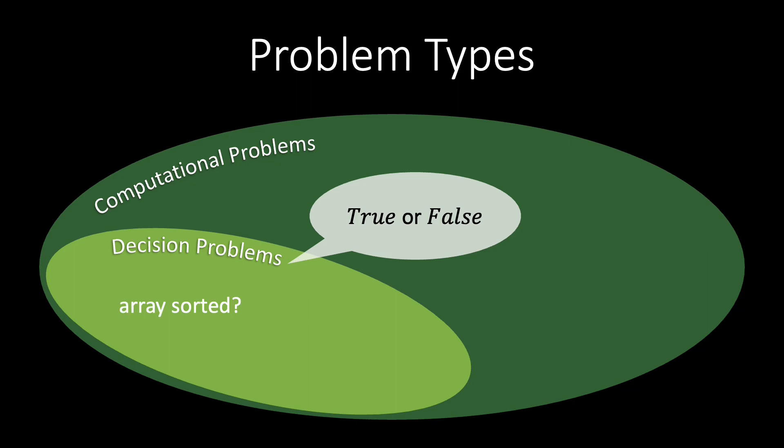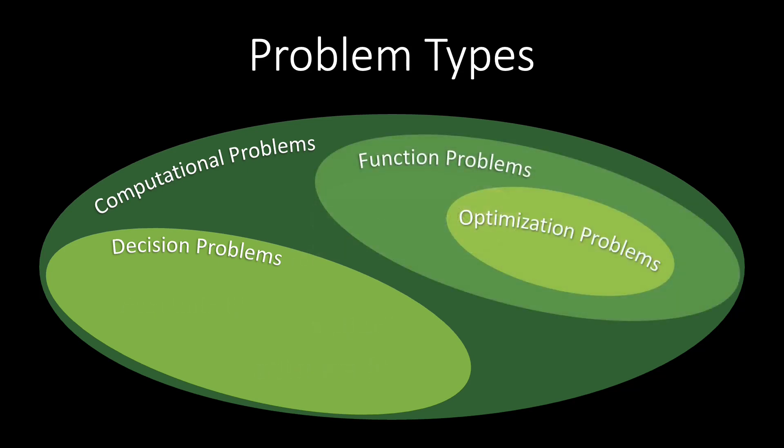There are many examples of decision problems. For example, is a given array sorted? Does a number x evenly divide y? Is x a prime number? For every optimization problem, we can ask a corresponding decision problem.